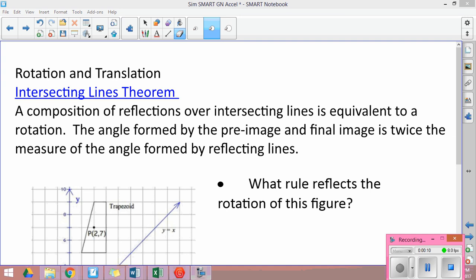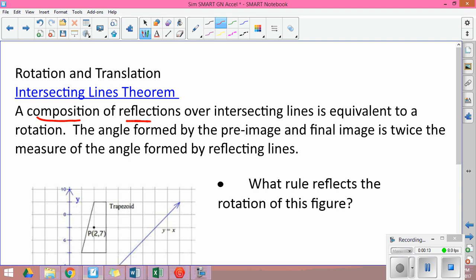A composite of reflections over intersecting lines is equivalent to a rotation. So if I do a flip and a flip, I end up with some sort of a rotation.